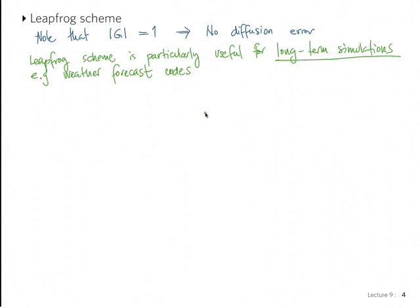It can have other problems in terms of stability for nonlinear PDEs. But there's some trickery that can be applied to stabilize it, and that's how it's used in weather forecasting. So it does have some applications. Every scheme has its pluses and its disadvantages, and this becomes an art of which scheme to choose for a particular problem. Sometimes there'll be a little bit of trial and error, but over time you gain a feeling for what each scheme is good for.